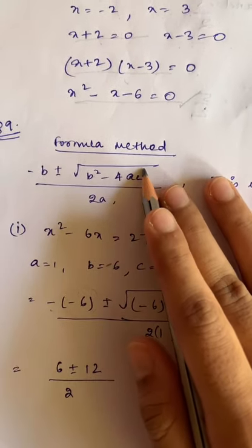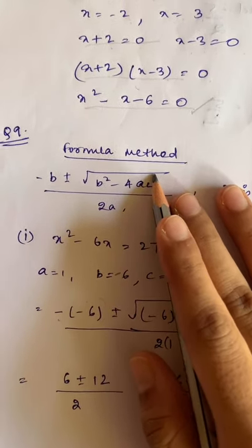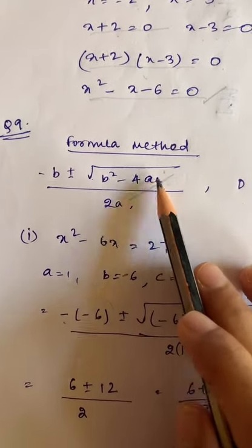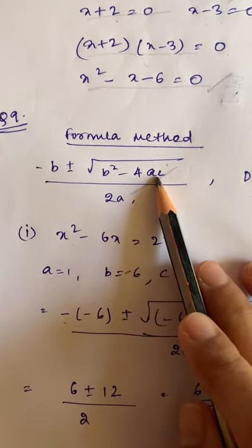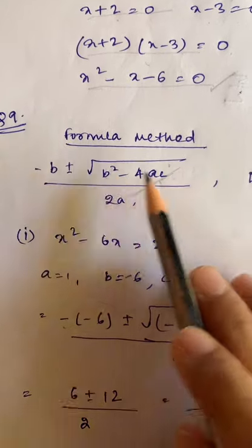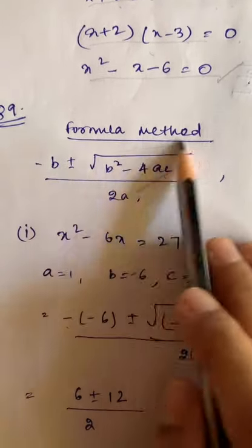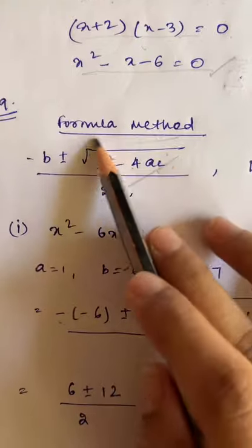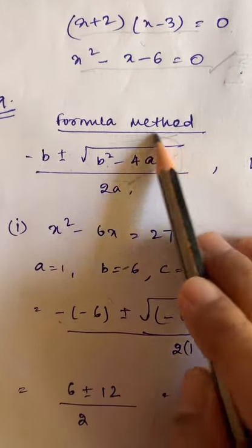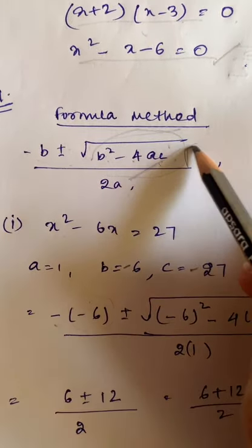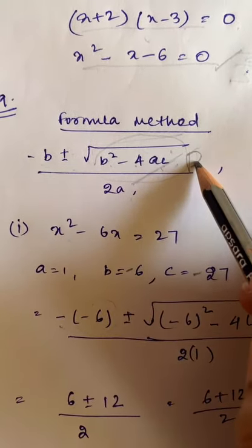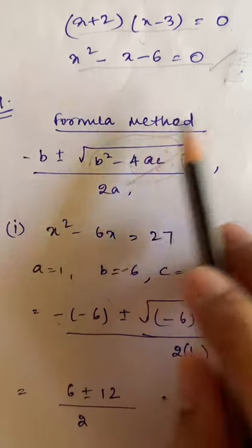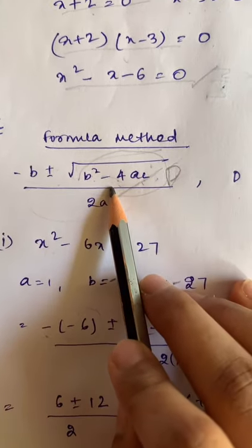Apart from the splitting the middle term method, we can also use the formula method to find solutions. The quadratic formula is x = (-b ± √(b² - 4ac)) / 2a. The expression b² - 4ac is the discriminant D, which can be calculated separately and then substituted into the formula.